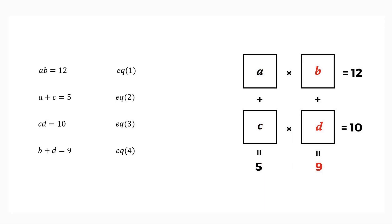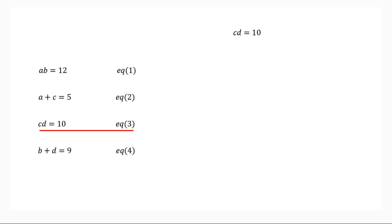Here we got four unknowns and four equations. To solve these equations we start with equation 3, CD equals 10. From equation 4 we can find D equals 9 minus B. So C into 9 minus B equals 10.